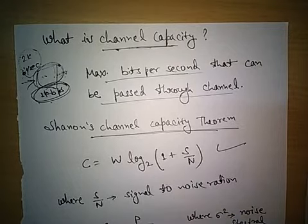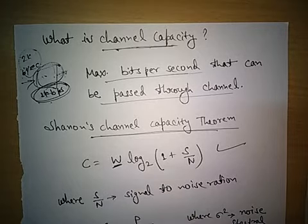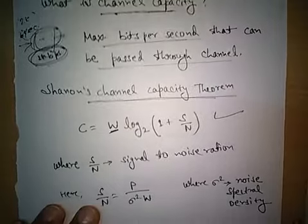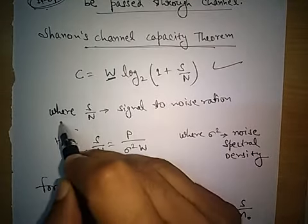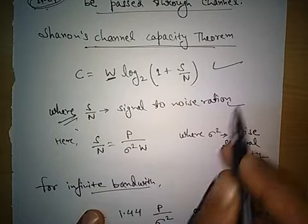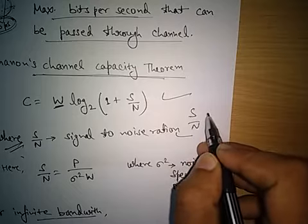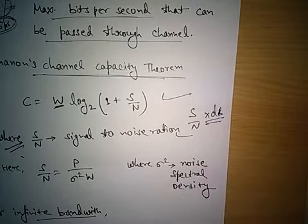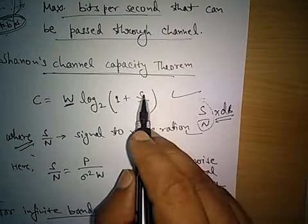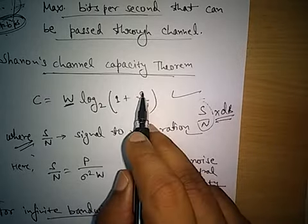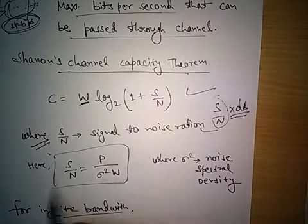Here, W is the bandwidth of the signals being passed, and S/N is the signal-to-noise ratio. We must note that S/N is not in dB — if it is given in dB, we must convert it to a simple ratio. We have to use the simple ratio value in this formula.